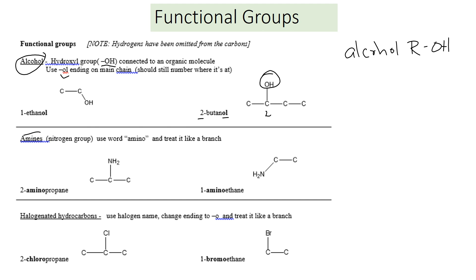Let's talk about amines. Amines have a nitrogen group in them and are named with the word amino. Here we have 2-aminopropane. Propane, because we have 3 carbons: 1, 2, 3.